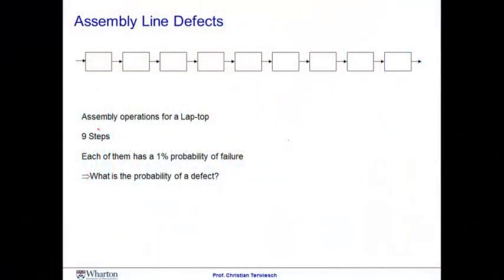Consider an assembly line that puts together laptop computers. The assembly line consists of nine stations, and let's say for the sake of argument that each of these nine stations has a probability of 1% of producing a defect. Let me introduce some notation. Let's take this resource here, which is number six in the process. We say that the yield of that resource is a percentage of units that this resource produces according to specification. In this case, this is simply 1 minus the probability of a defect, which is 99%.